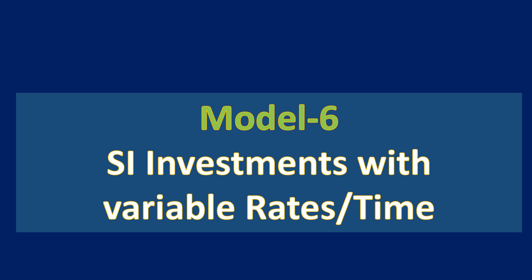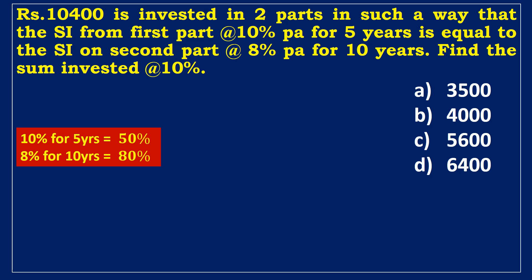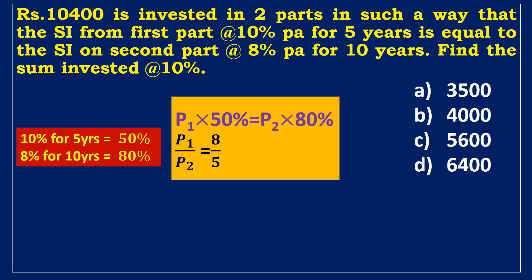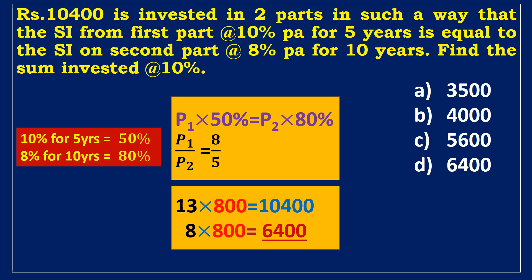Model 6: SI Investments with Variable Rates or Time — First example. 10,400 rupees is invested in two parts such that the SI on the first part at 10% per annum for 5 years equals the SI on the second part at 8% per annum for 10 years. Find the sum invested at 10%. The effective rates are: 10%×5 = 50% and 8%×10 = 80%. Setting P1×50% = P2×80% gives P1:P2 = 8:5. Total = 13 units. Since 13 units = 10,400, each unit = 800. The sum invested at 10% is P1 = 8 × 800 = 6,400 rupees.